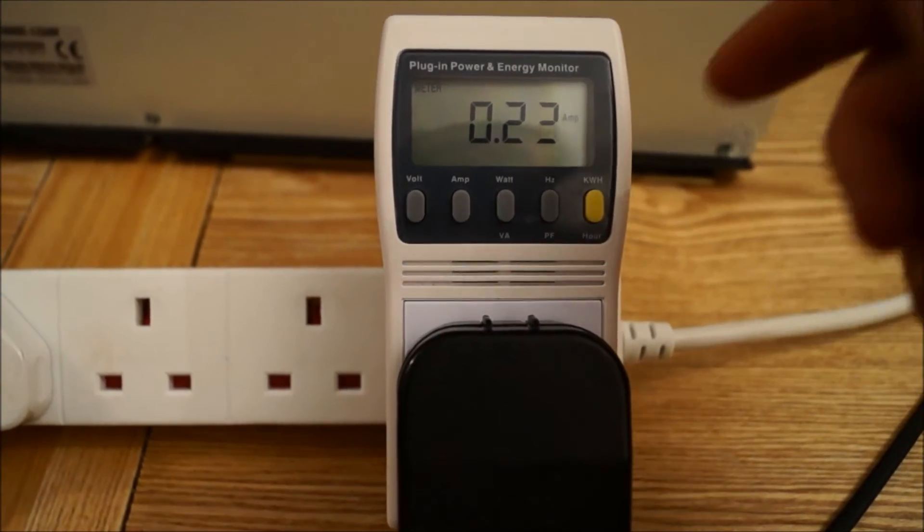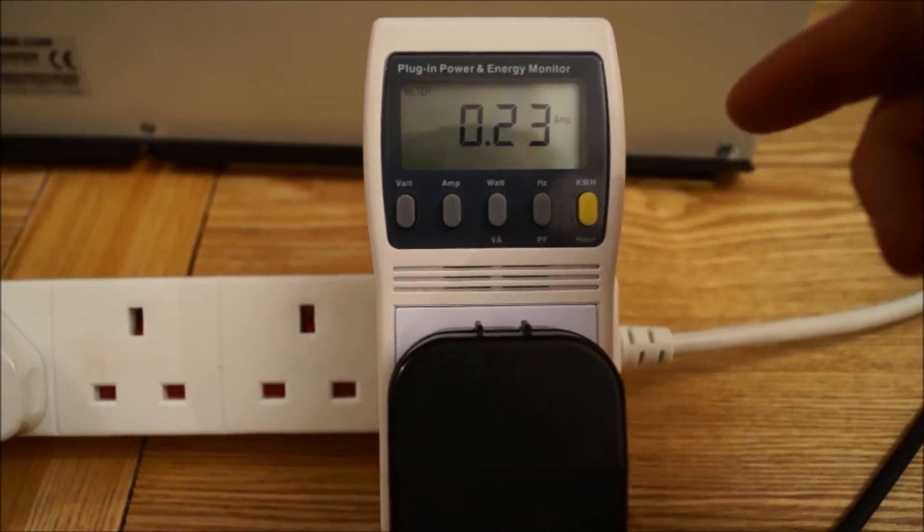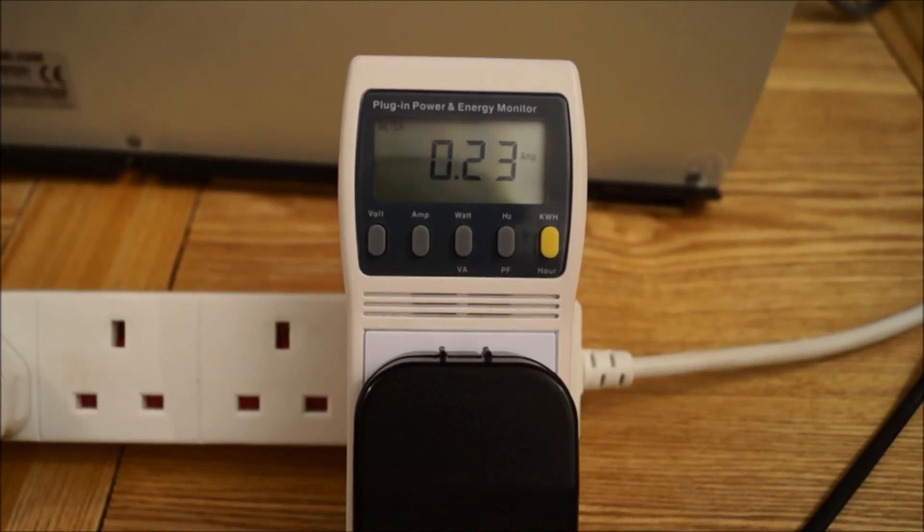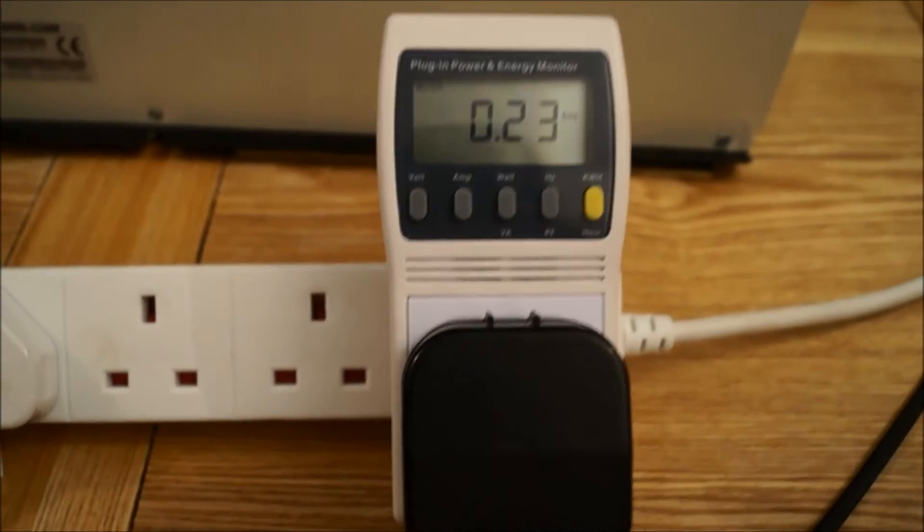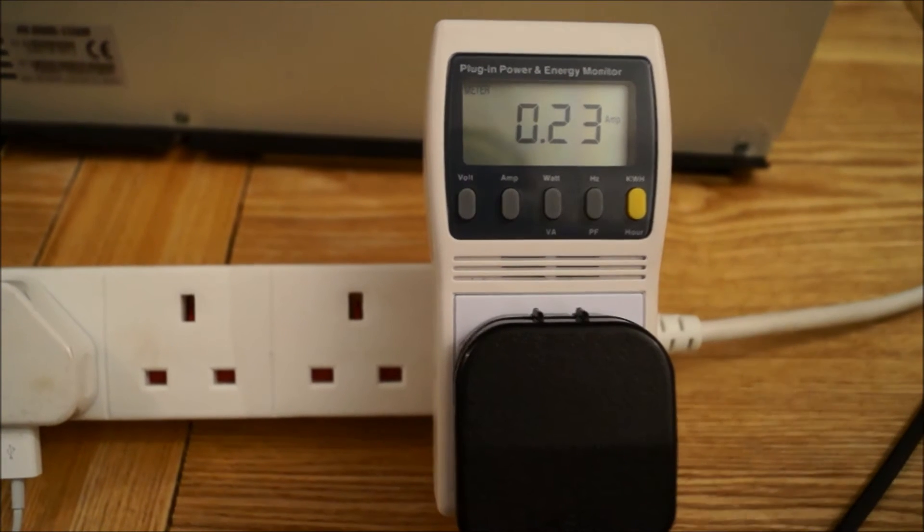So the television is drawing 31 watts. And the important figure for this exercise is it's drawing 0.23 amps at 240 volts. We can go through in another video how you work out the watts when you only know the volts and the amps. But at the moment we're just going to be working out how long will the television work off a 12V battery.